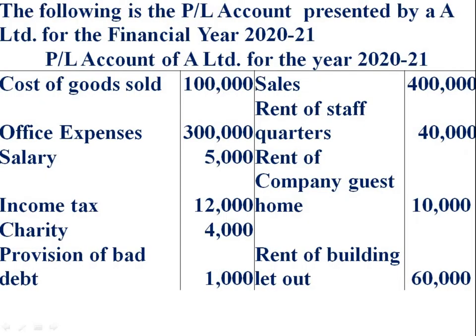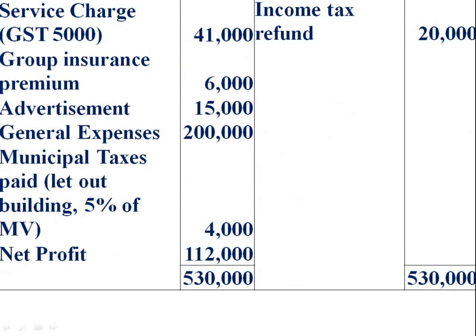We are given the profit and loss account of A Limited. On the debit side: cost of goods sold, office expenses, salary, income tax, charity, provision for bad debt. On the credit side: sales, rent of staff cottage, rent of company guest house, rent of building let out. The P&L account also includes service charges, group insurance premium, advertisement, general expenses, municipal tax paid, and net profit. On the credit side there is one more item: income tax refund.